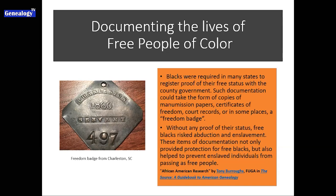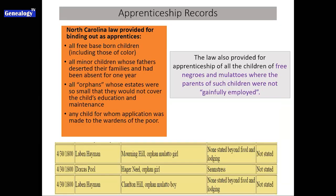It actually happened to someone on my tree who's a collateral relative. Heartbreaking, but it was important that they had these types of documentation on them. A lot of these different types of documents are preserved and we can find them and learn from them today. Another very valuable record set for free people of color involves apprenticeship records.